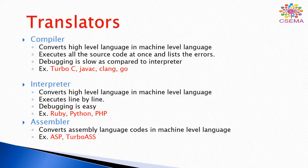That's why the interpreter provides better debugging compared to the compiler. Debugging means finding errors in the computer system and removing them — that is called debugging. The third important translator is the assembler, which is used in assembly language programming to convert assembly language codes into machine-level language. Examples of assemblers are ASP and Turbo S.